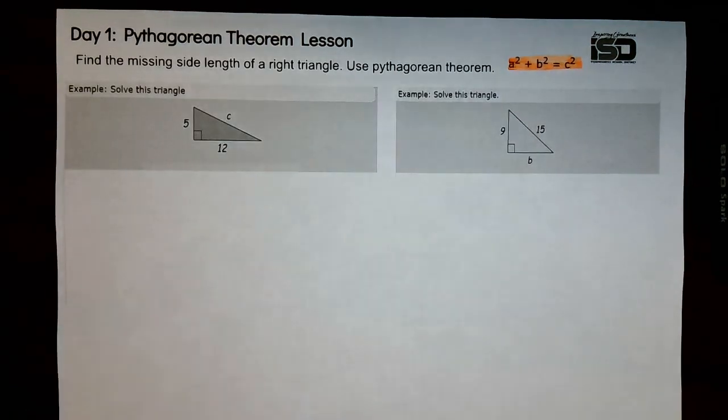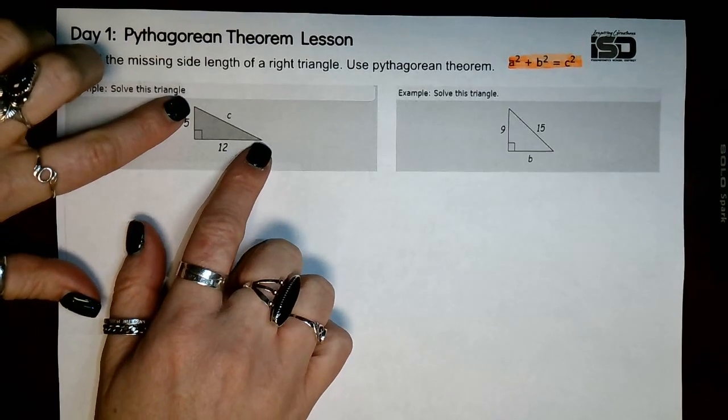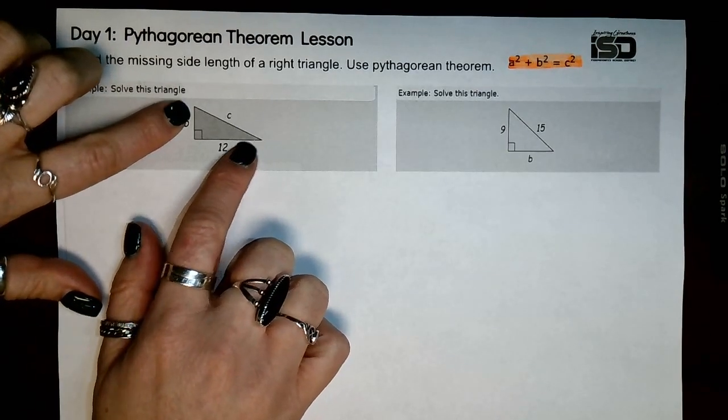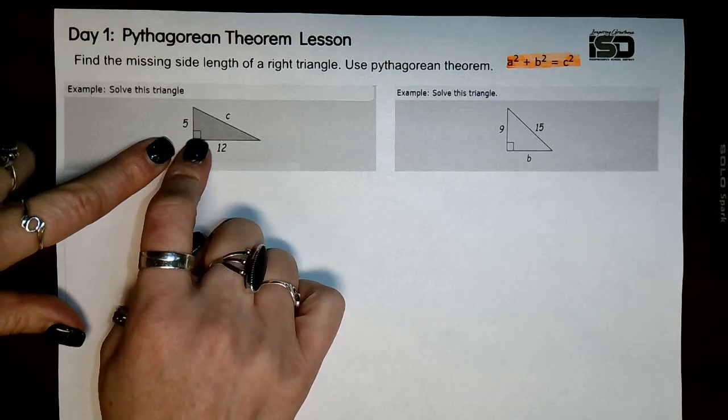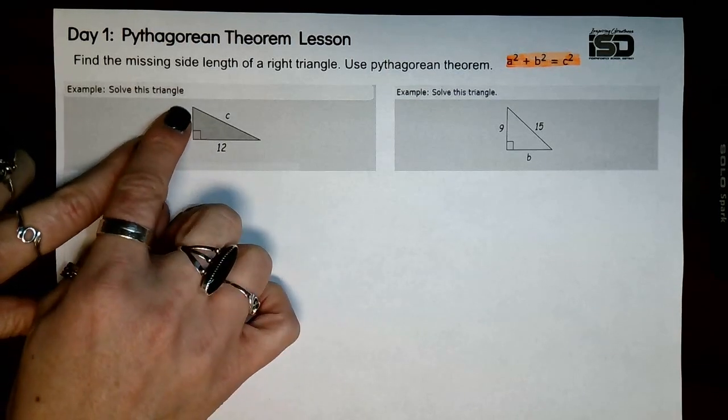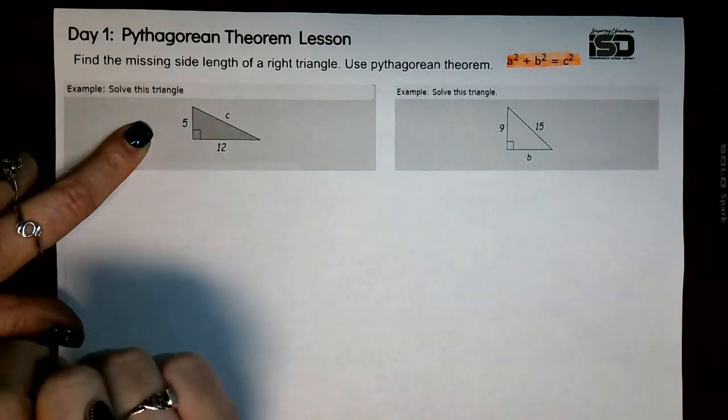Now our first triangle, you are given the two legs. Remember with the right triangle, there are three sides. The two shorter sides are called your legs, and then you have your hypotenuse, which is across the right angle. It is also your longest side.